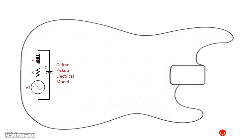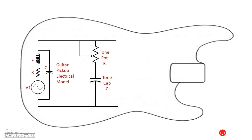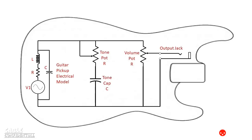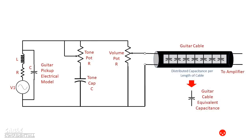Now let's put our pickup model in a guitar and add the other basic components typically used. First we'll add the tone potentiometer and tone capacitor. Next we'll add the volume pot, and finally the output jack to complete our model of a basic electric guitar. Now we'll plug in our guitar cable. A guitar cable, because of the way they're made, will have capacitance between its conductors. Every foot of cable will have the same capacitance, so the longer the cable, the greater the capacitance.